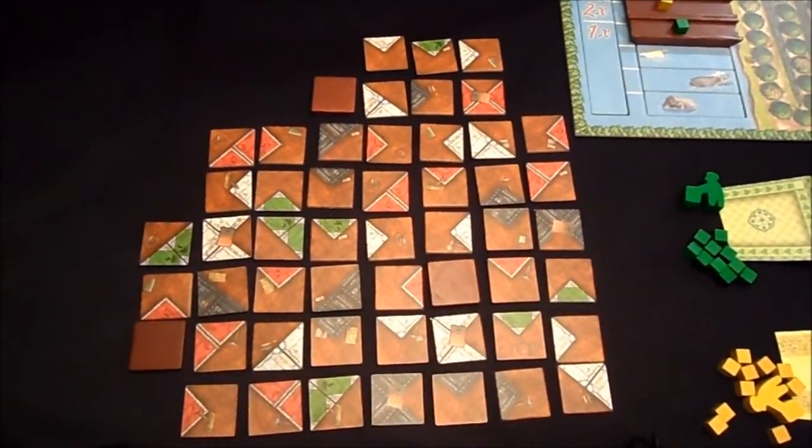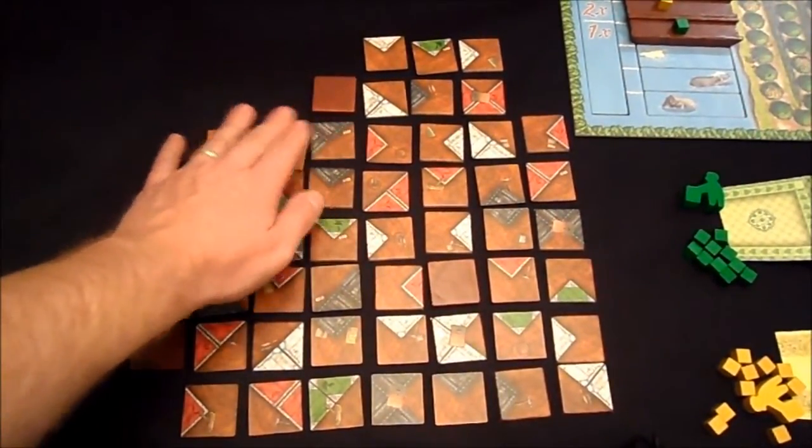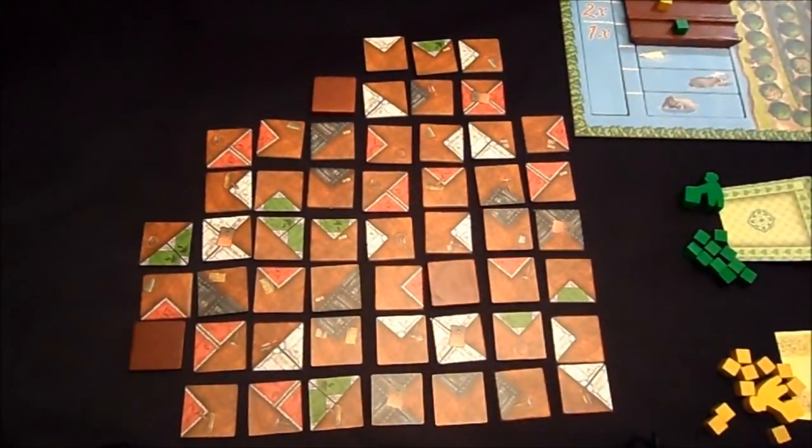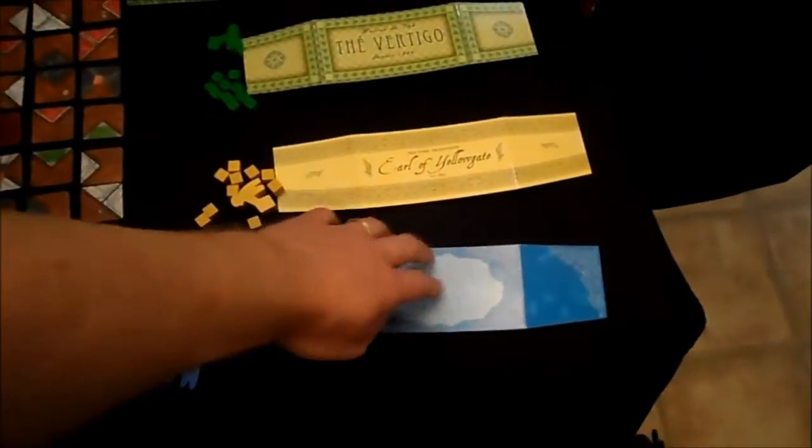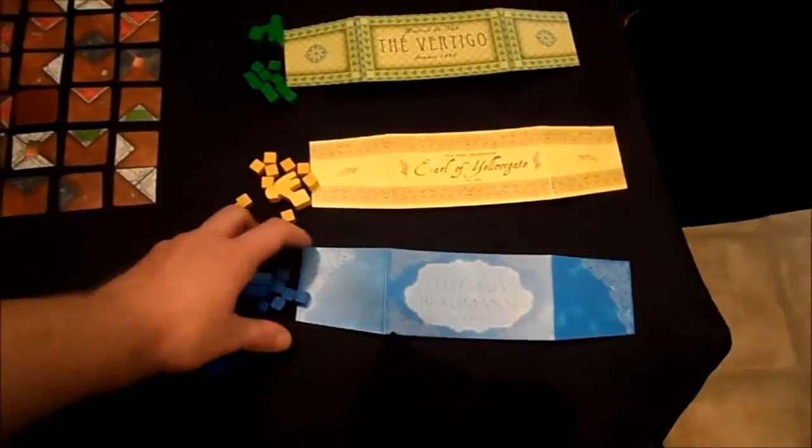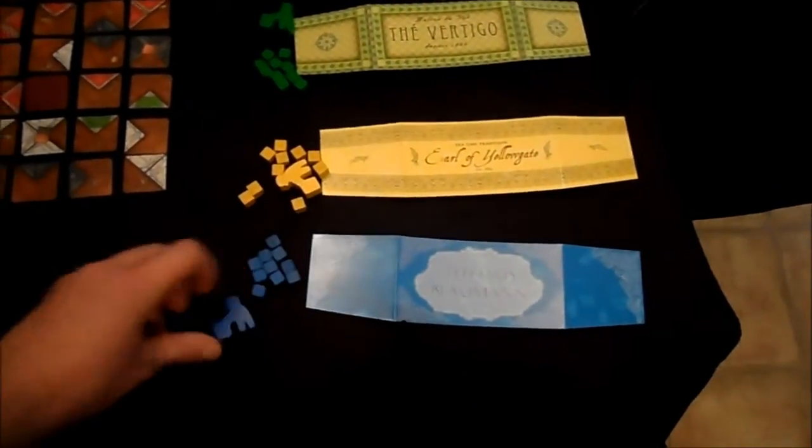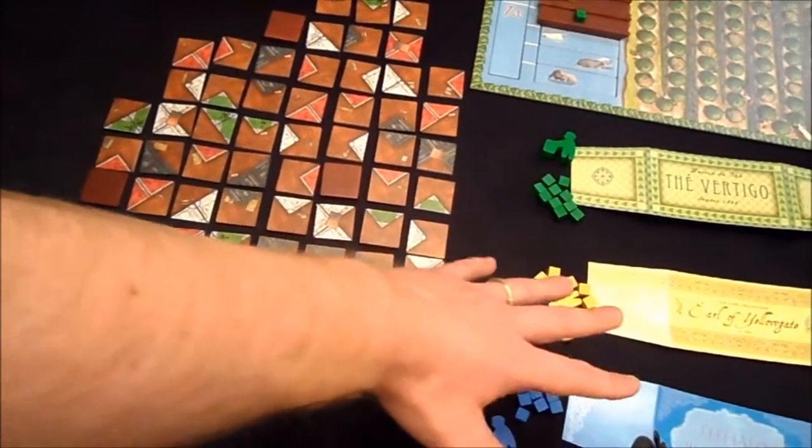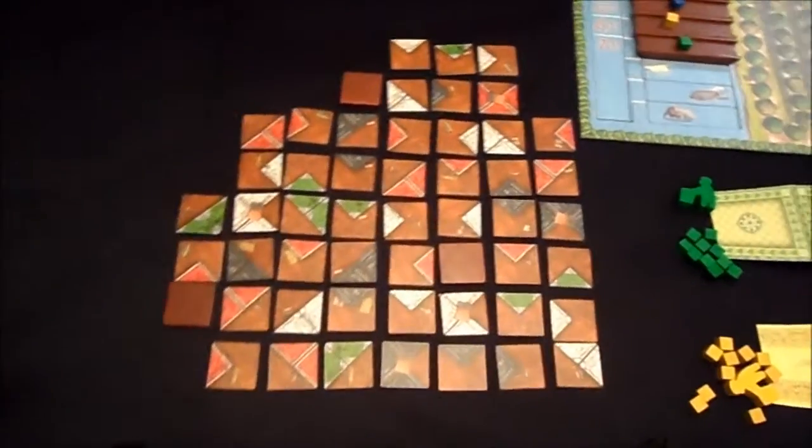Each player is going to have a screen and a set of cubes and a little tea collector. They're going to put any tea tiles behind their screens, and they leave the cubes out in front of them.